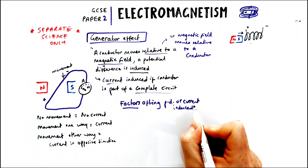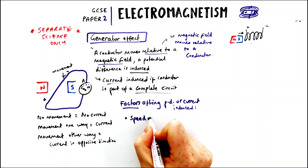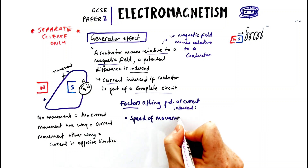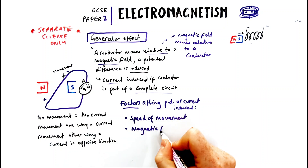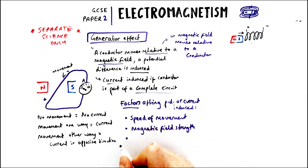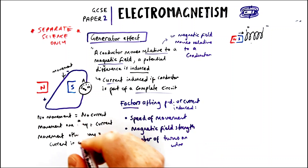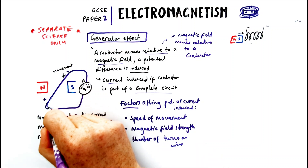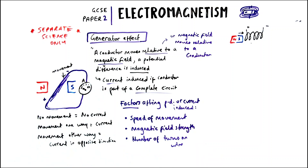Factors affecting the potential difference or current induced are the speed of the movement — moving faster gives a higher current or PD — the magnetic field strength, and the number of turns on the wire. More turns on a coil means a higher potential difference induced.